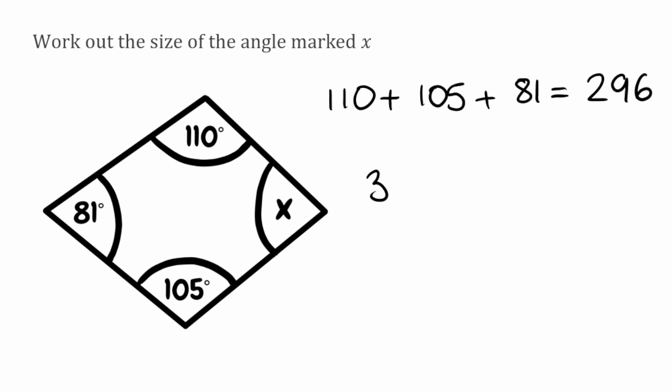So then all we simply do is take our 360 and take away that 296, and that's going to leave us with 64. So our missing angle here would be 64 degrees.